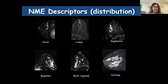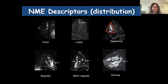Non-mass enhancement is divided according to distribution. Focal means it occupies less than a segment. Linear is self-explanatory — a line, sometimes with a branching pattern. Segmental is a triangular shape of enhancement with the apex pointing towards the nipple, representing a TDLU. Regional occupies a larger area than a segment. Multiple regions involves more than one larger area with normal breast tissue in between. Diffuse involves a large part of the breast. Linear and segmental are pointers towards malignancy; focal, regional, multi-regional, or diffuse can be seen in both benign and malignant cases.